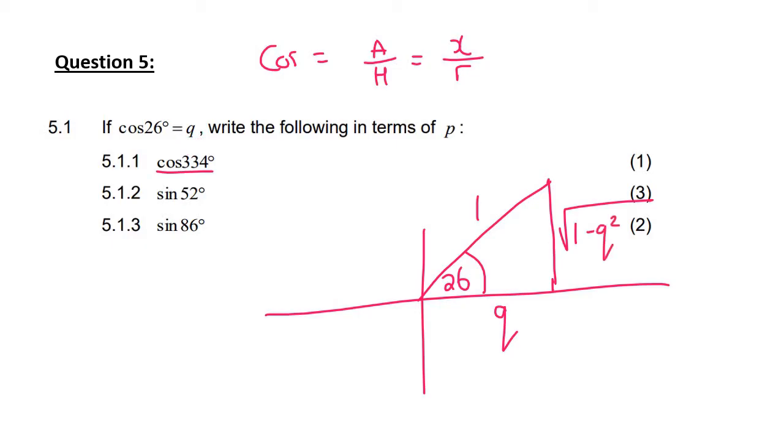So cos of 334, we should go and reduce that. Cos of 334 is cos of 360 minus 26, and that'll just become cos 26. Now we already know what cos 26 is. It's q, and that's why this one is only worth one mark.